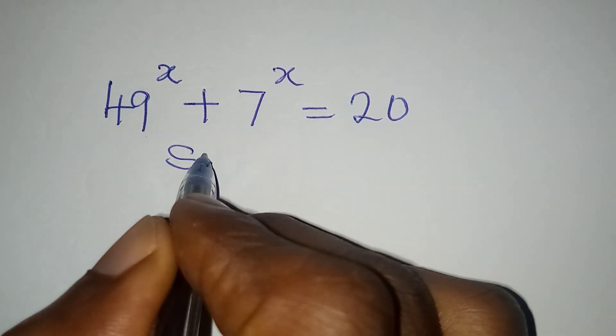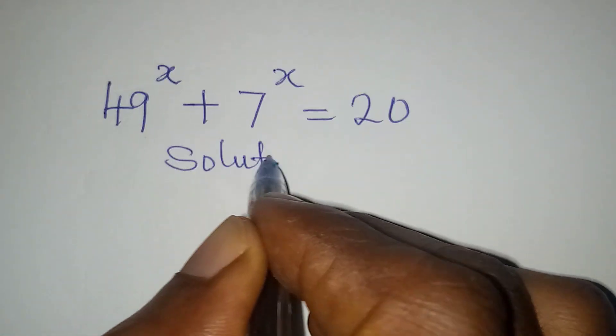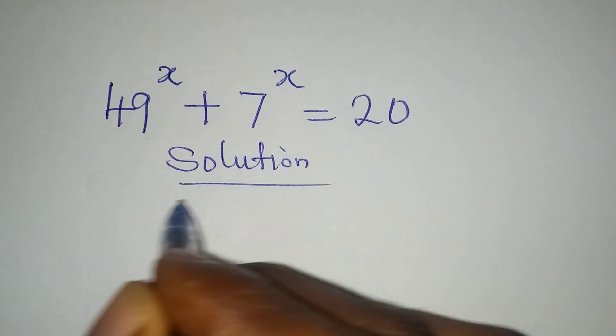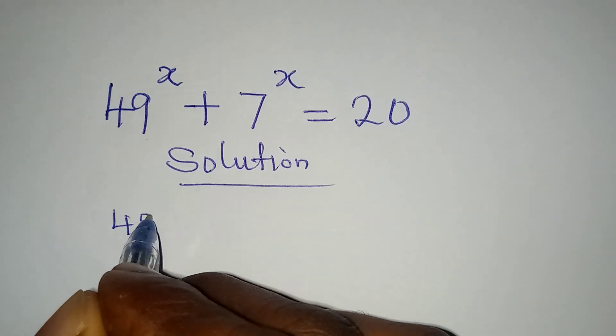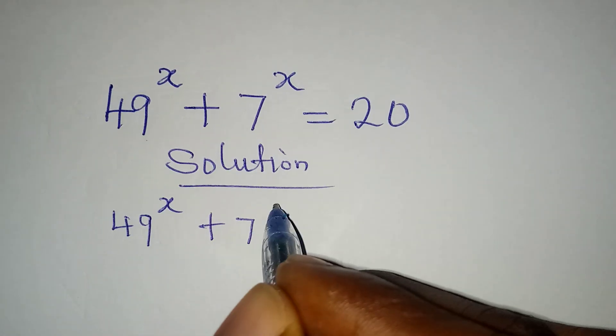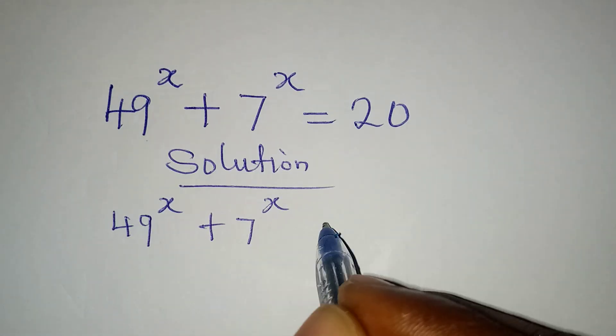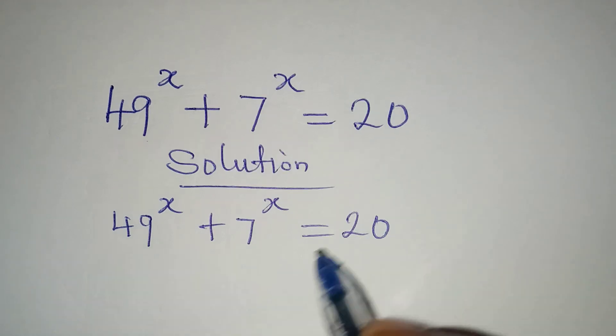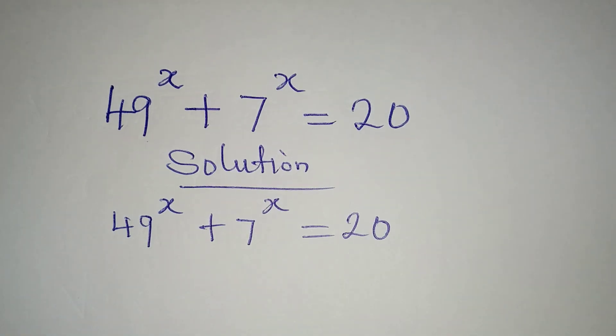Hello everyone, let's work on this problem quickly. We have 49 to the power of x plus 7 to the power of x equals 20. The first step I will take is to take everything to the left hand side.